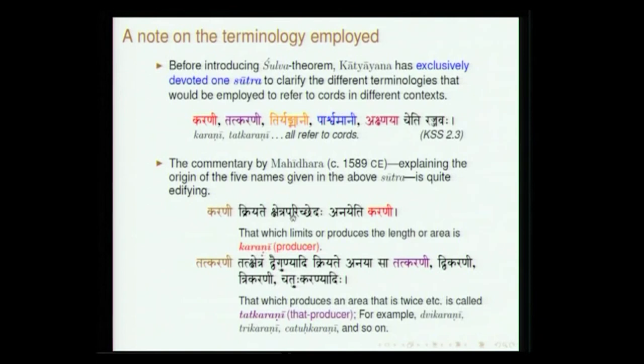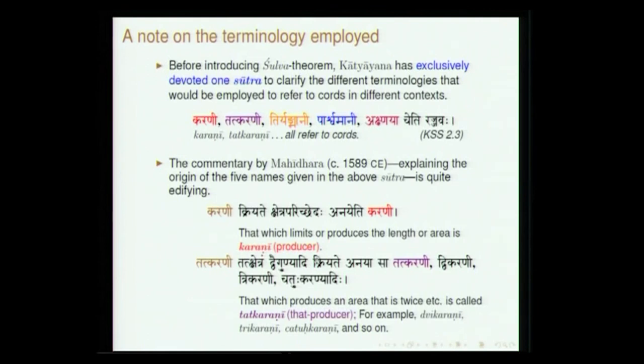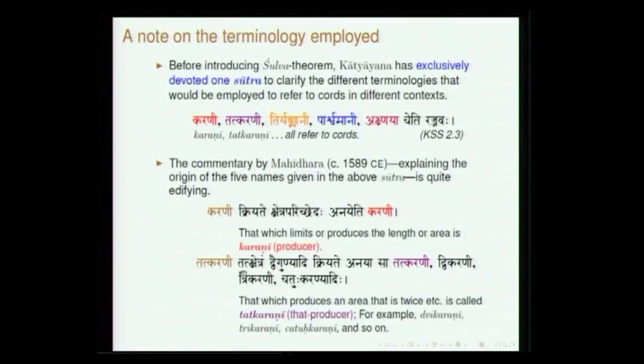The commentator Mahidhara clarifies what these terms mean. Karani: Kriyate Kshetra Parishwedaha Anaya Iti Karani — the measurement of the field is done by it. Tathkarani: in various places you find terms like Dwikarani and Trikarani. Dwikarani actually means root 2, Trikarani means root 3. The term has been defined as: Takshetra Dvaigunyadi Kriyate Anaya Iti Dwikarani — you want to find out twice the area, so the side has to be root 2. Similarly, root 3 and so on.